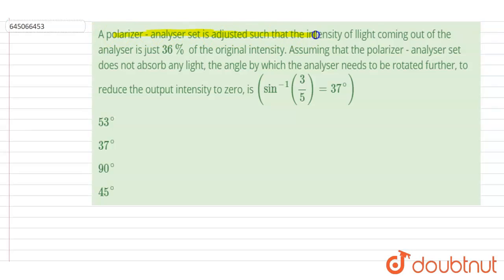is adjusted such that the intensity of light coming out of the analyzer is 36% of the original intensity. Assuming that the polarizer-analyzer set does not absorb any light, the angle by which the analyzer needs to be rotated further to reduce the output intensity to zero is...